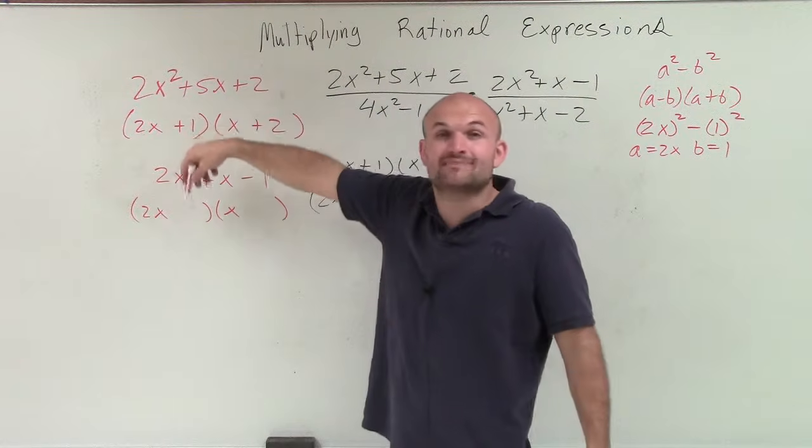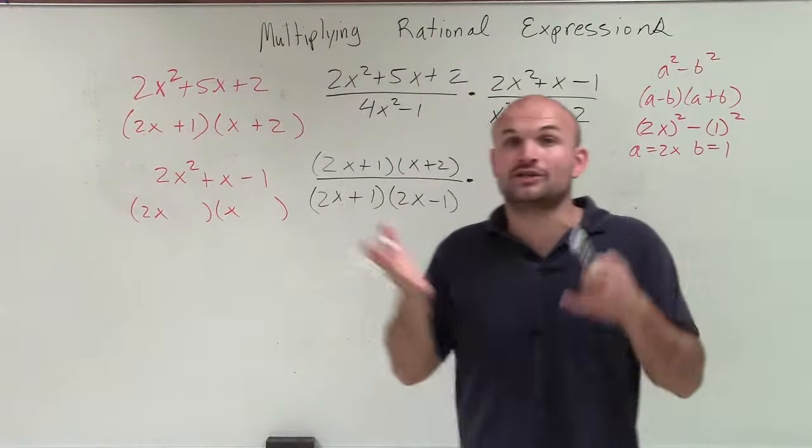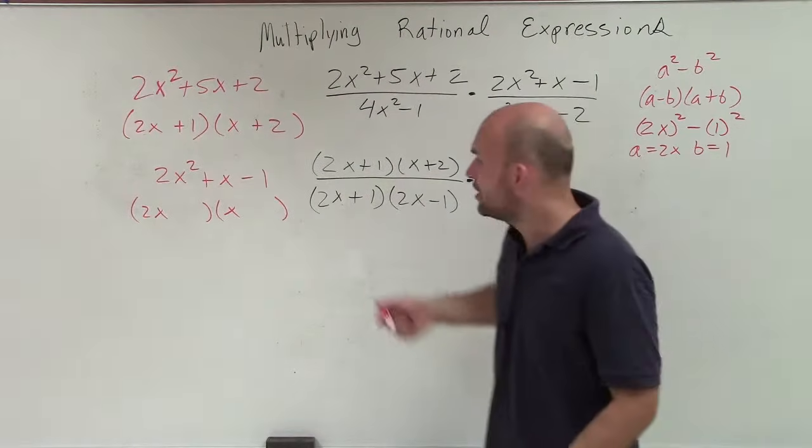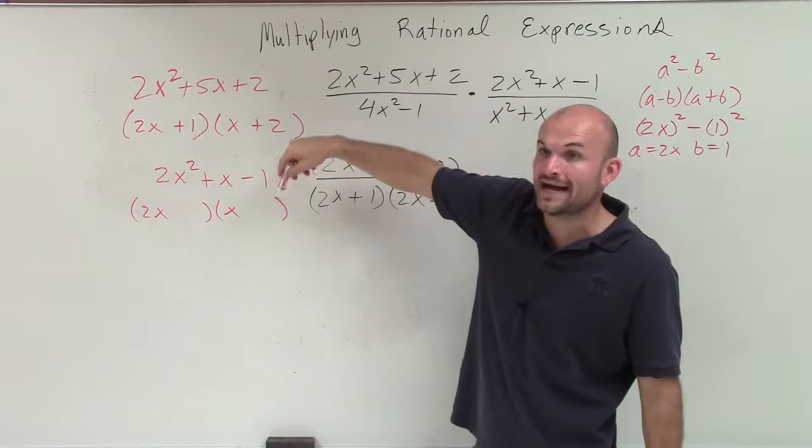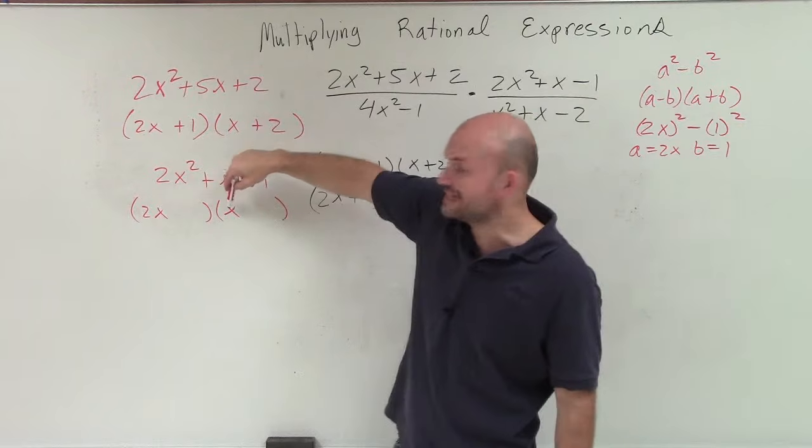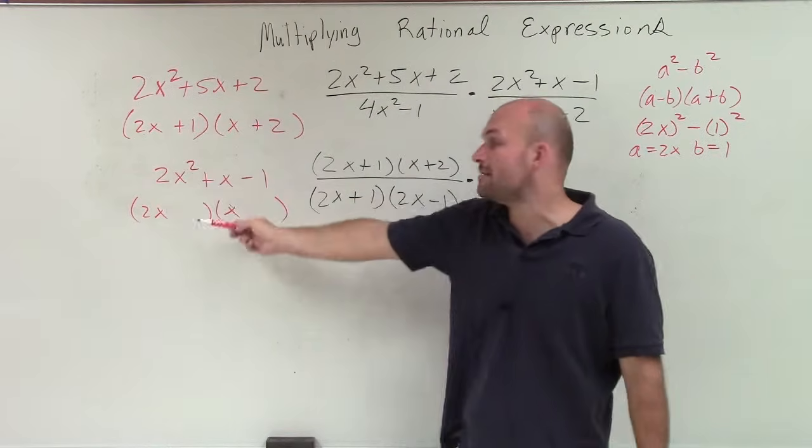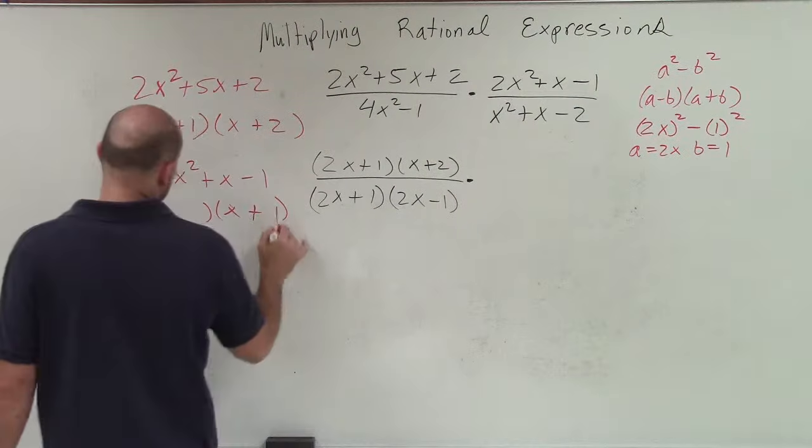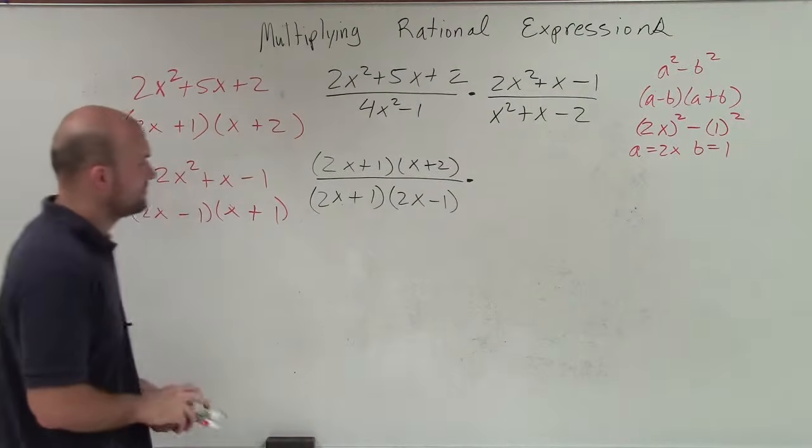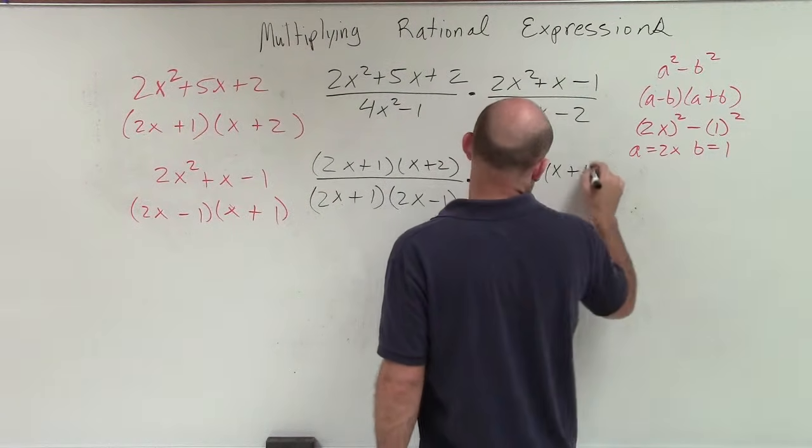Now, we know my middle term has to add up to 1. Therefore, the larger of my products, either in the outer or in the inner, has to be positive. Well, I know that if I multiply 2 times my outer 1, I know that's going to be my larger product, because the inner would be just an x. So whatever I multiply the 2x by has to be positive. So that's going to be positive 1, and that will be minus 1. So therefore, I rewrite that as 2x minus 1 times x plus 1.